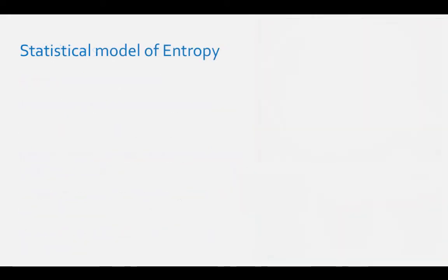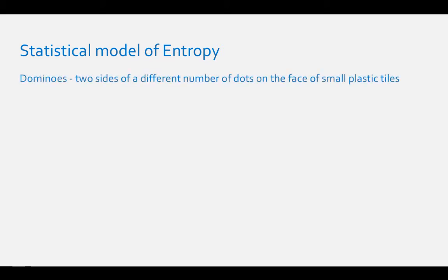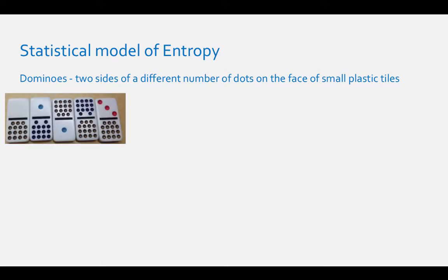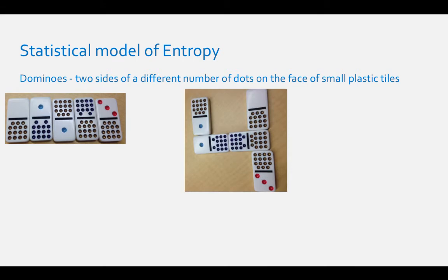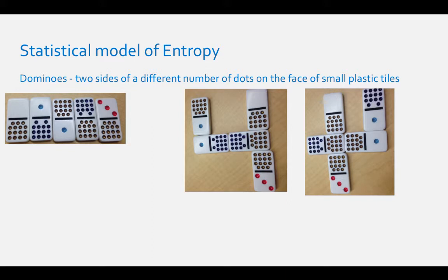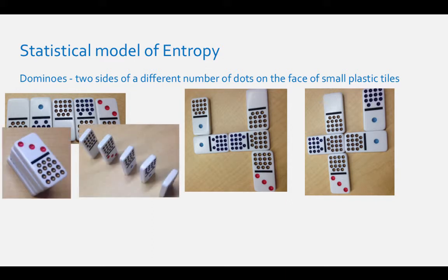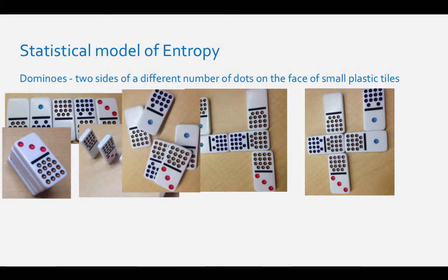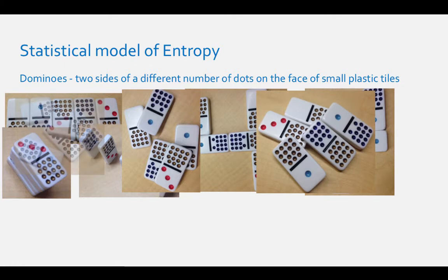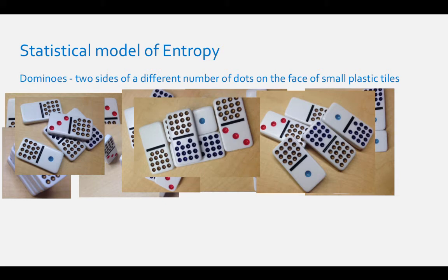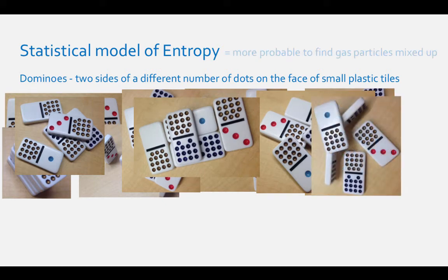Entropy is sometimes defined using a statistical model of energy dispersion. Have you ever played with dominoes? Dominoes have two sides with a number of dots on one face of a small plastic tile. If you were playing with dominoes and put down five dominoes, you could do it like the game of dominoes in one of two ways, or you could do it many other different ways — stack them, align them to fall, or put them in a pile. There are probably endless different ways to arrange these dominoes, but only two ways that involve the sides matching up. Statistically, it is more probable to find the dominoes mixed up. Relating these dominoes to gas particles, statistically it is more probable to find the gas molecules mixed up than to find them ordered.